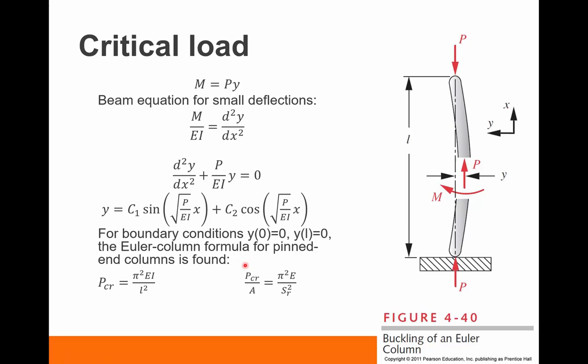Now we can substitute in E as the strength of the column, so the material properties of the column. And this slenderness ratio now helps us understand how slender this column is relative to other columns. So both of these equations are equivalent.